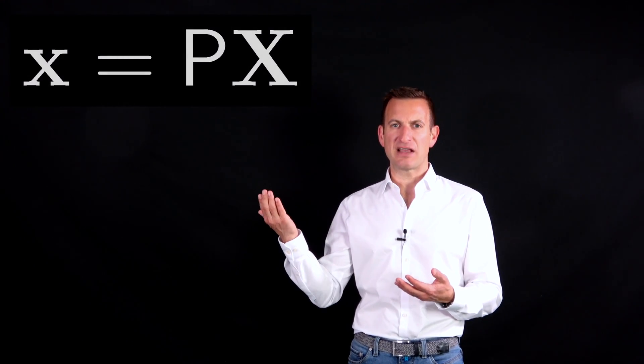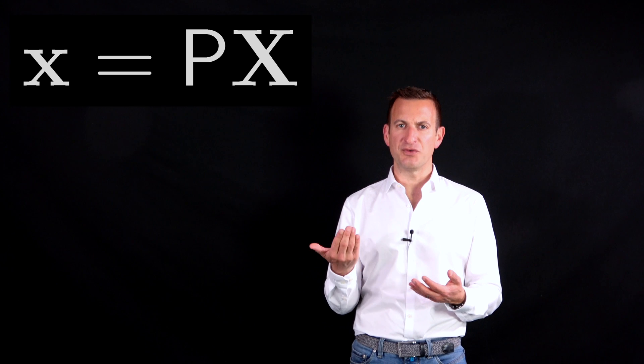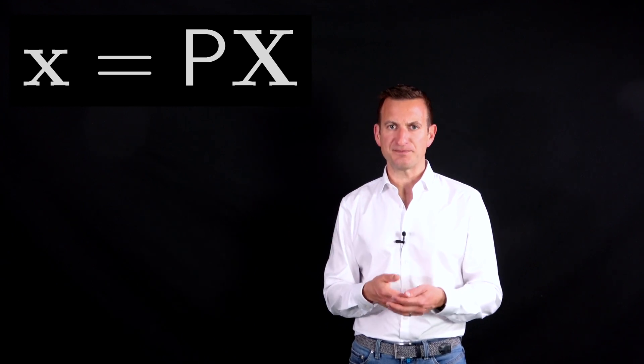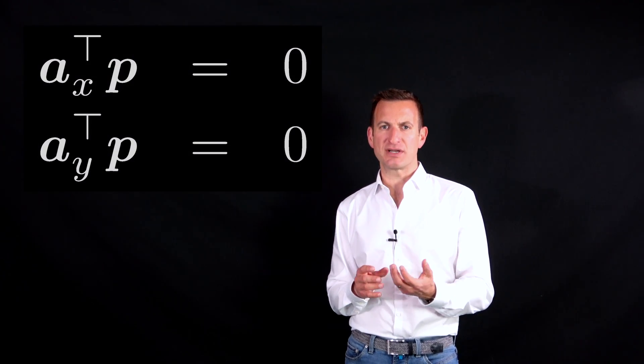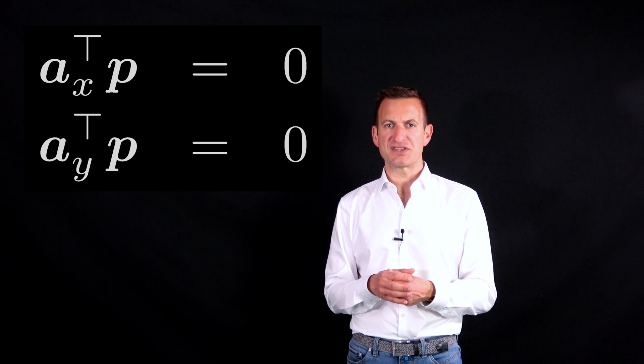So how does it work? Based on the information that I have here, so uppercase X is known, lowercase x is observed and P needs to be estimated, I can actually rearrange this equation so that for every point that I'm actually picturing I get two small equations out.